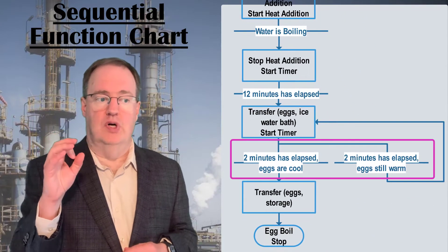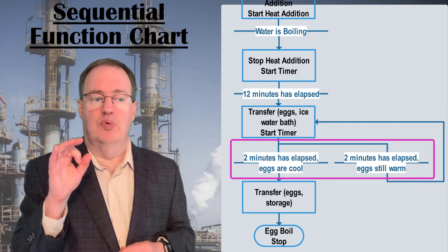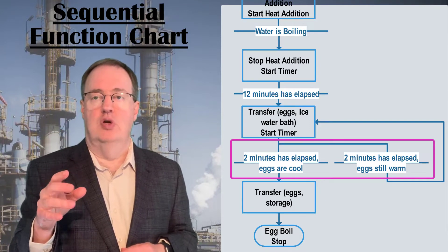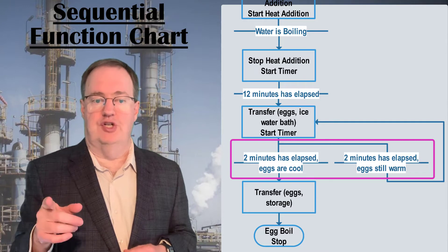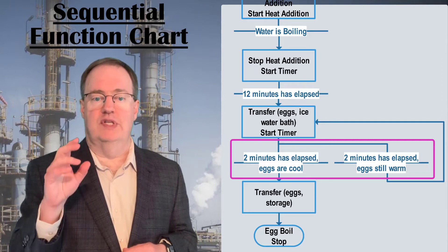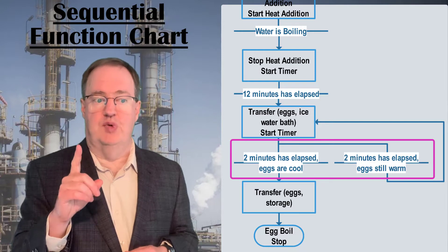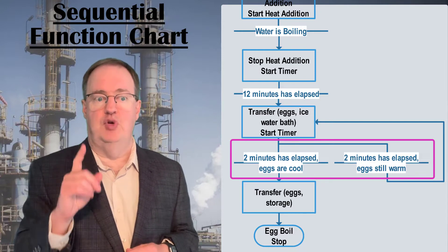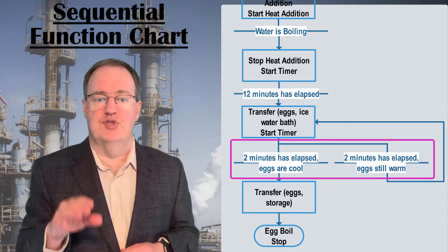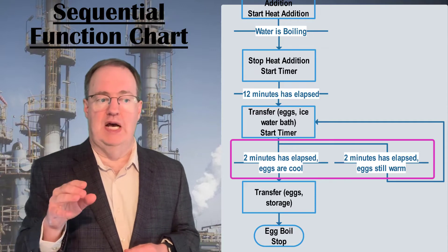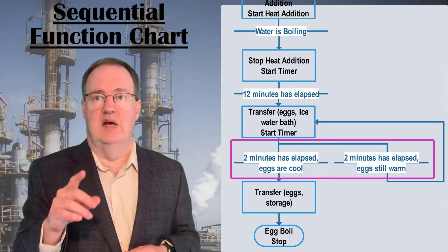When we get to our decision point, we represent that as a branch with two or more transitions. The rule with a decision is that one and only one branch must be true. They must be mutually exclusive, so we always have one path to proceed down, but never more than one.